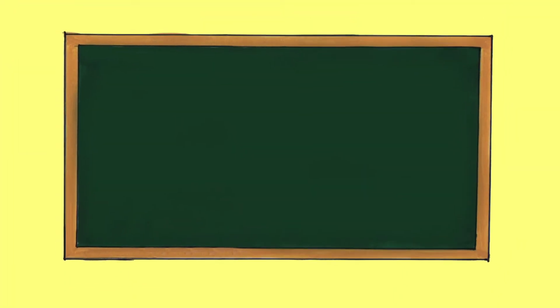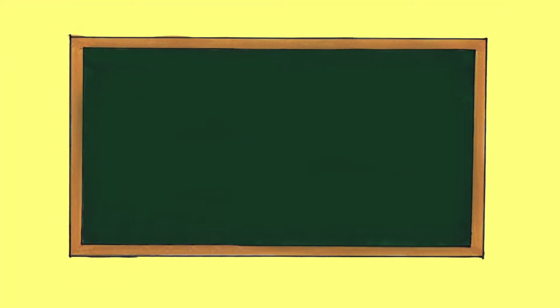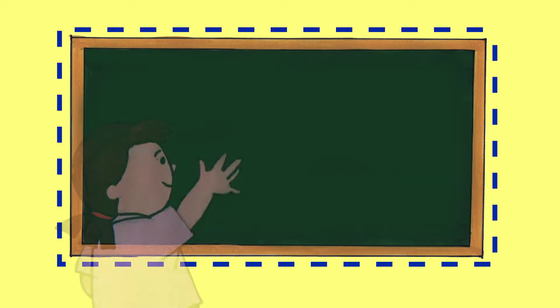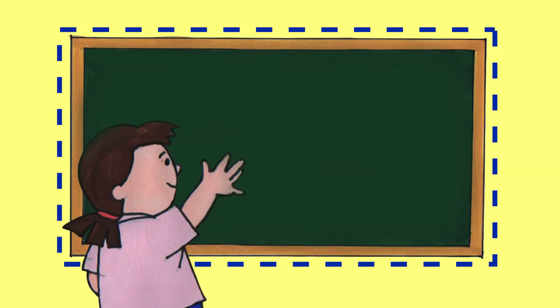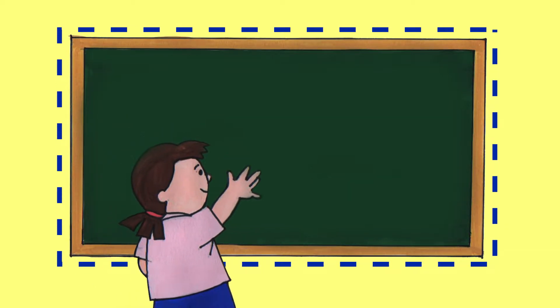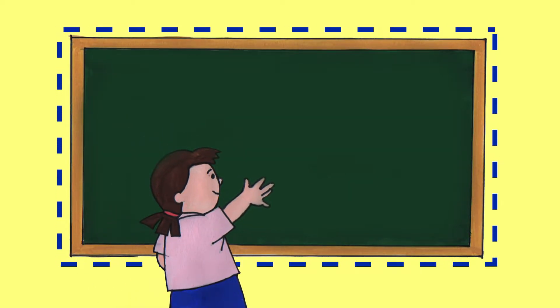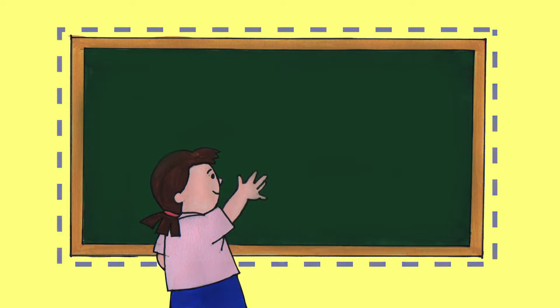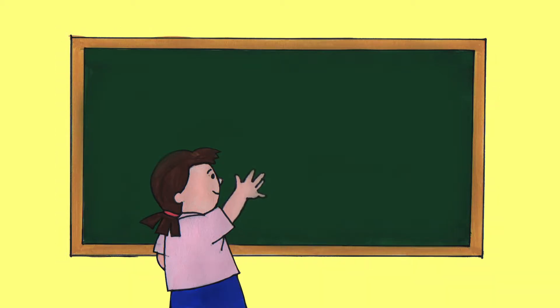When you get to school, there are blackboards. They're rectangular. Go near them! Touch the surface — it's smooth, right?